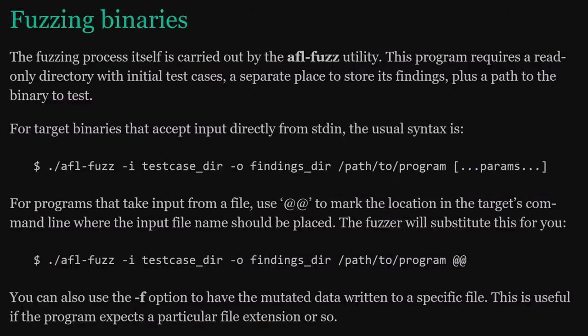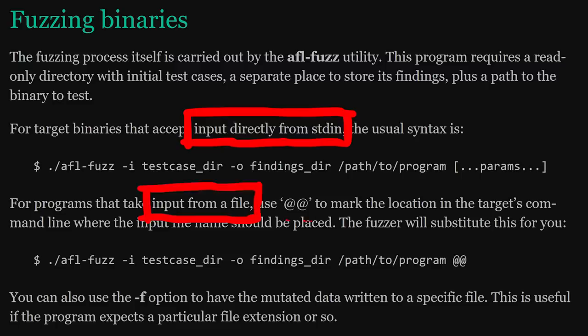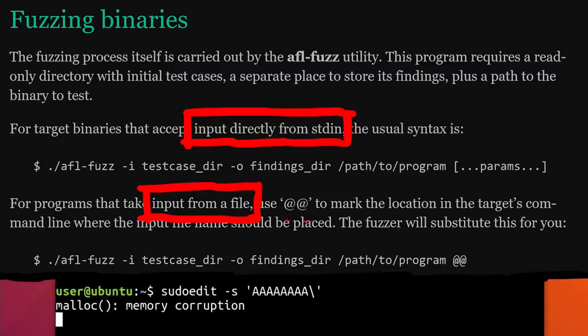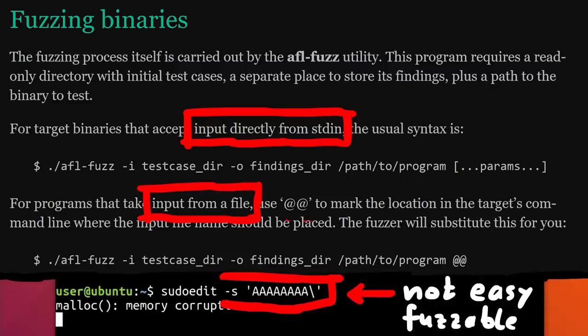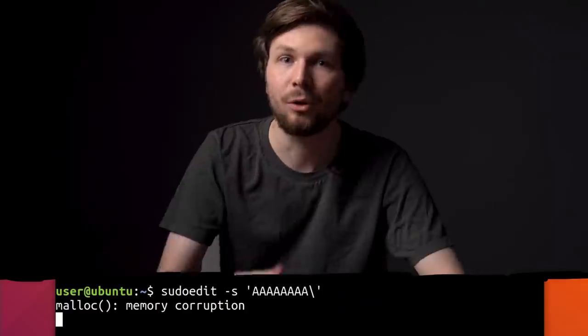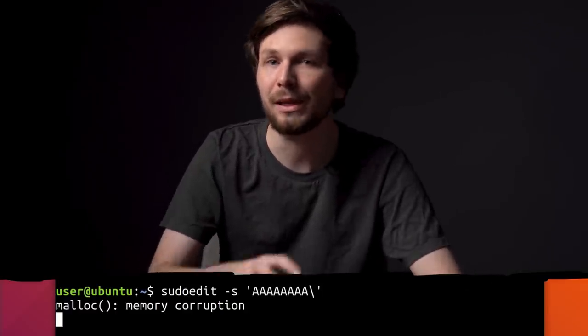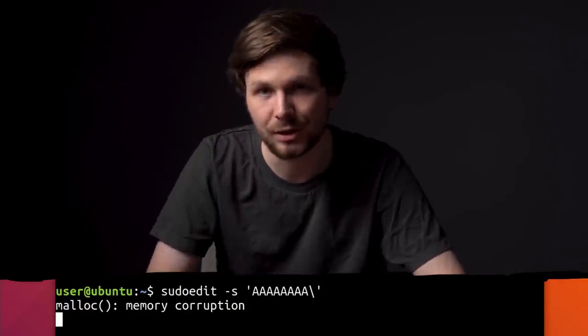It already starts with the fact that AFL is intended to fuzz file parsing. So AFL wants to fuzz a target binary that reads data from standard input, or a file name passed as an argument. So it can't easily fuzz arguments itself. In order to make that possible, you need to make modifications.